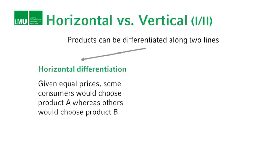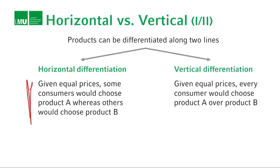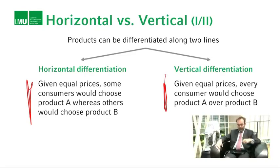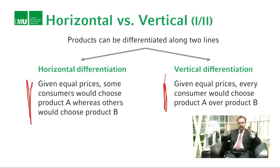When we talk about product differentiation, we implicitly talk about two types. Products can be differentiated along two lines: horizontal differentiation or vertical differentiation. Horizontal differentiation means that for equal prices, some consumers would choose product A whereas some consumers would choose product B. So if the 7 and the 10 o'clock flight cost the same, then some people will go for the 7 o'clock flight and some people will go for the 10 o'clock flight.